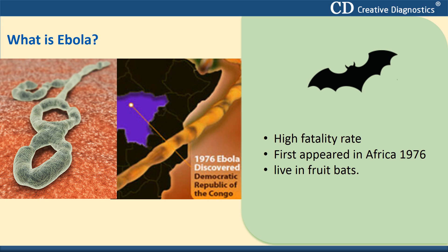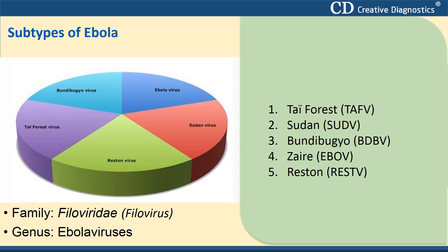Ebola viruses are believed to live in fruit bats. Ebola is caused by viruses in the Ebola virus and Filoviridae family. Ebola virus comprises five distinct species: Tai Forest, Sudan virus, Bundibugyo virus, and Zaire virus. Four of the strains are responsible for outbreaks in humans. The fifth subspecies, Reston virus, has caused disease in non-human primates but not in people. The virus causing the 2014 West African outbreak belongs to the Zaire species.